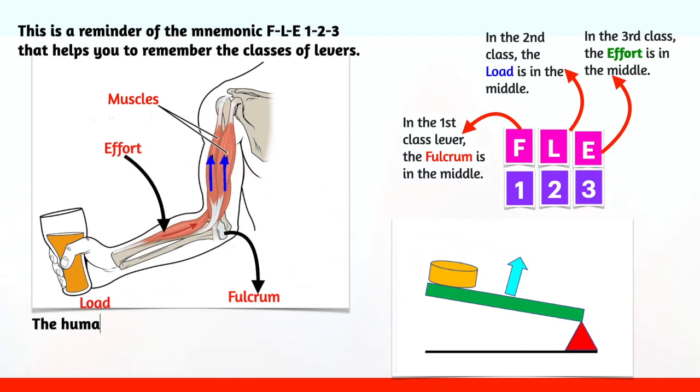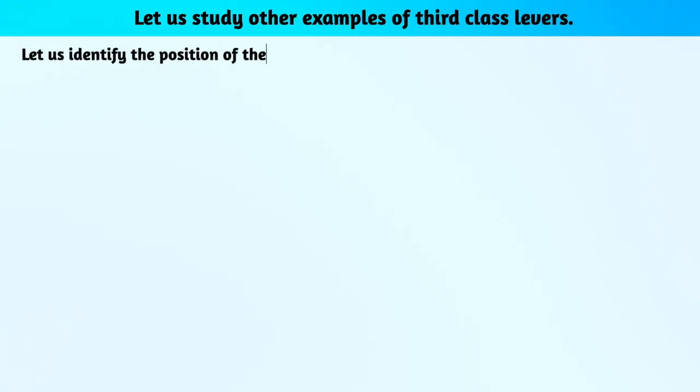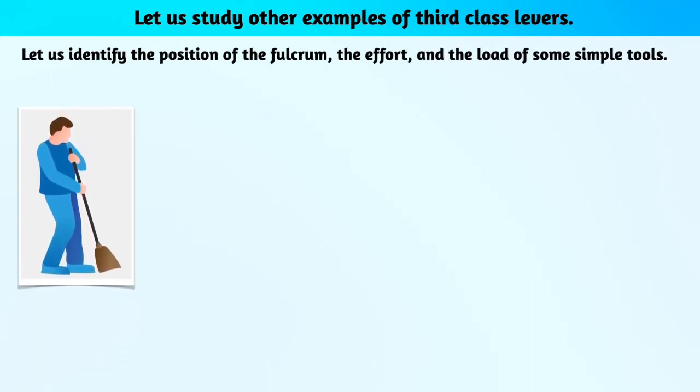The human hand is a third class lever. The effort is between the load and the fulcrum. Let us study other examples of third class levers. Let us identify the position of the fulcrum, the effort, and the load of some simple tools.